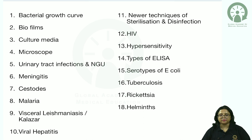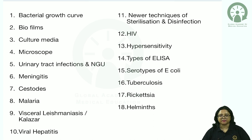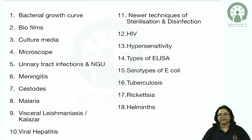We will then move on to visceral leishmaniasis or Kala Azar, viral hepatitis and the different types of hepatitis viruses with special reference to hepatitis B surface antigen. Also the newer techniques of sterilization and disinfection, HIV covered briefly, immunology with emphasis on hypersensitivity and types of ELISA, serotypes of diarrheagenic strains of E. coli, tuberculosis, rickettsial infections, and helminths.